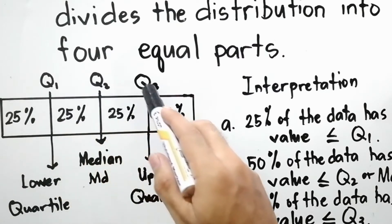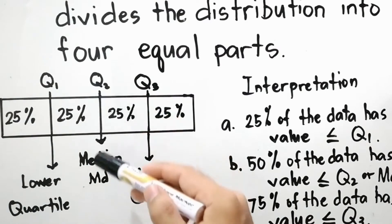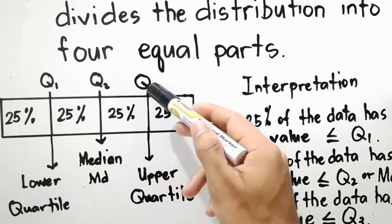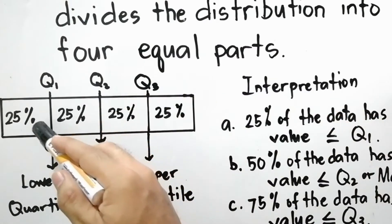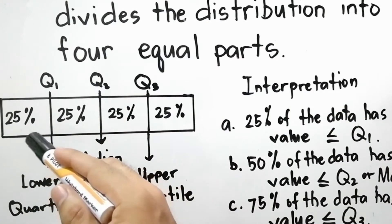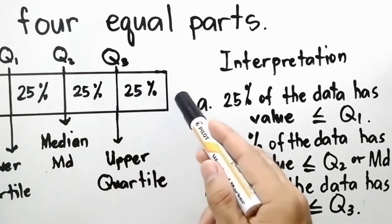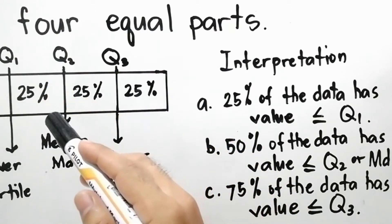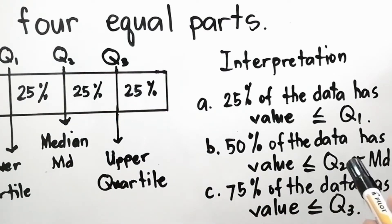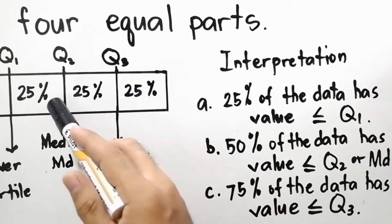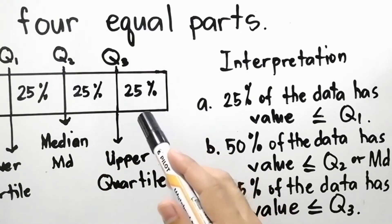Q1, Q2, and Q3: Q1 is also known as the lower quartile, Q2 is also known as the median (MD), and Q3 is also known as the upper quartile. For Q1, 25 percent of the data has a value less than or equal to Q1, or 75 percent is above Q1. For Q2, 50 percent of the data has a value less than or equal to Q2, and 50 percent are greater than or equal to Q2.